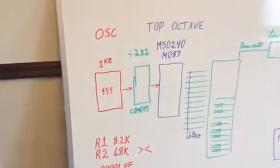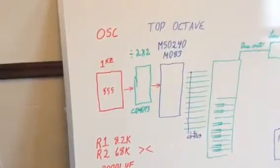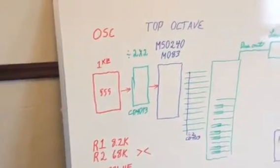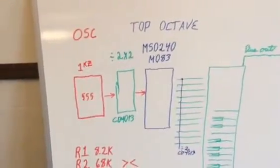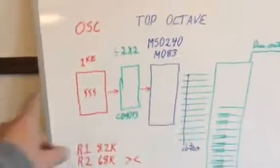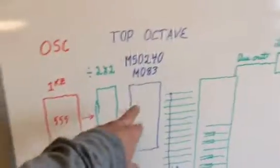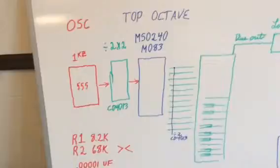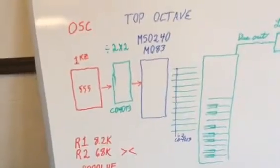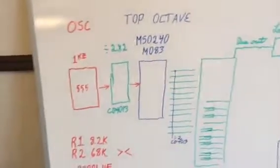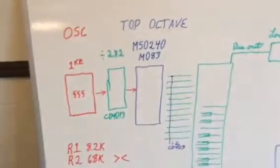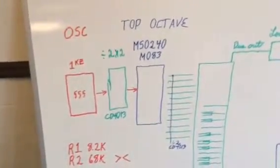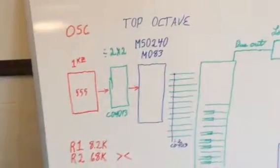We're passing that into the top octave IC, which is, I believe mine's an MS040 MO83. I believe they're the same pin out. They may be a different top divisor. What's going to happen here, there's going to be one large division. Some of them were 420 something. Some top octave ICs were designed to run a one kilohertz oscillator. Some were designed to run a two kilohertz oscillator.